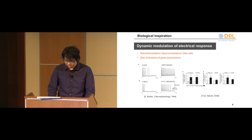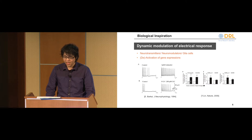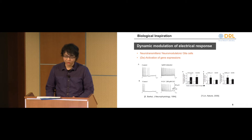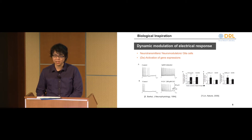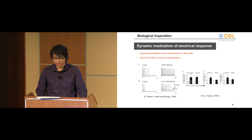So looking at this, we need to find a way to model this diversity. In this work, we focus particularly on the electrical response of neurons — more particularly, how the electrical response of a neuron can be dynamically modified. In the biological neural system, this can occur in several ways: you have neurotransmitters or neuromodulators, which are basically chemical messages that operate on a neuron's receptors or ion channels, and then change the response of the neuron.